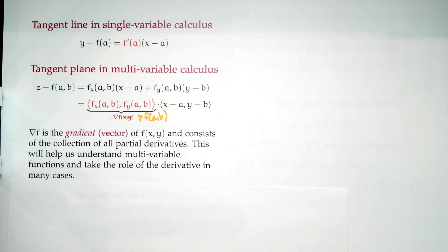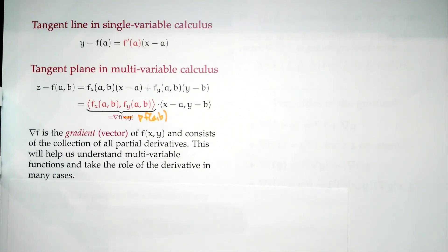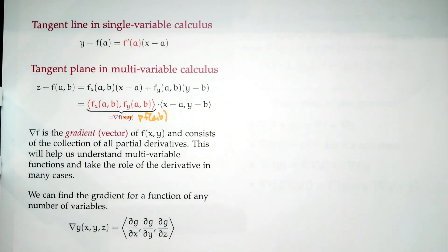The gradient vector consists of all the partial derivatives — that's it. It's the collection of all the partial derivatives, and it helps us understand how things are changing. It acts like the derivative. For a two-variable function, the gradient is (∂f/∂x, ∂f/∂y). It doesn't matter how many variables you have. For a three-variable function g(x,y,z), the gradient is (∂g/∂x, ∂g/∂y, ∂g/∂z). The moral is: the gradient is the collection of partial derivatives.